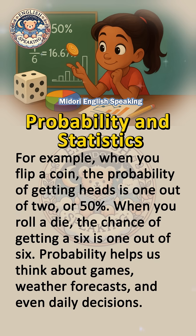For example, when you flip a coin, the probability of getting heads is 1 out of 2, or 50%. When you roll a die, the chance of getting a 6 is 1 out of 6. Probability helps us think about games, weather forecasts, and even daily decisions.